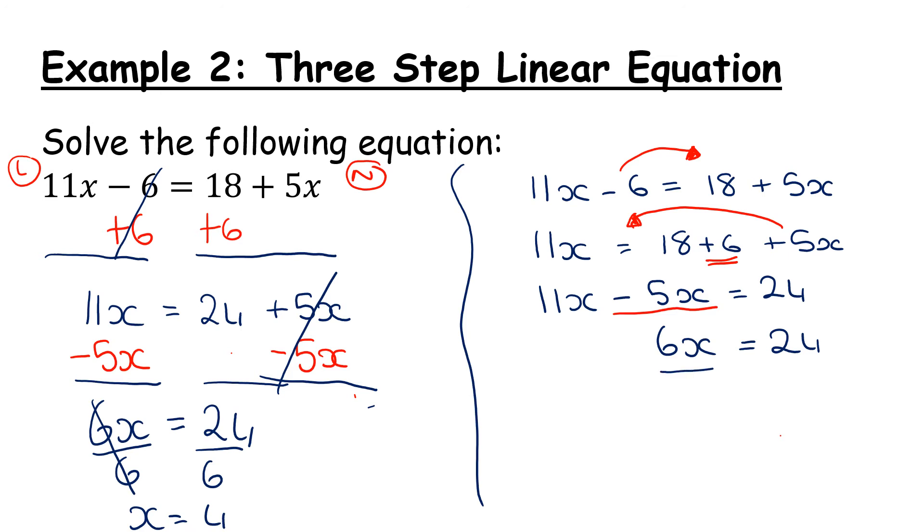Here, the 6x, we divide both sides by 6 because 6x means 6 multiplied. So to work backwards, we're always doing the opposite.